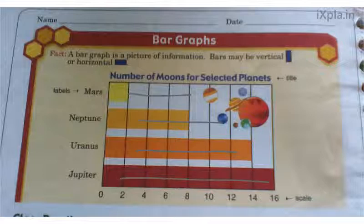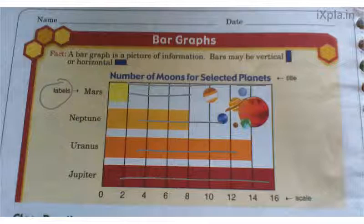We have four different things being represented and they are the labels. The first labels at top are Mars, Neptune, Uranus, and Jupiter. At the top we have the title of our bar graph: 'The Number of Moons for Selected Planets.' So we're looking at these four planets and seeing how many moons they each have. At the bottom of the bar graph you have your scale with different numbers representing moons for each of the four planets.